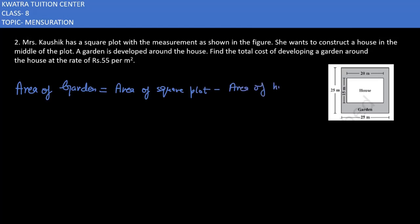Now you can see, area of the square plot will be 25 into 25. Area of the house will be length into breadth. The house measurement is 20 and the breadth is 15.